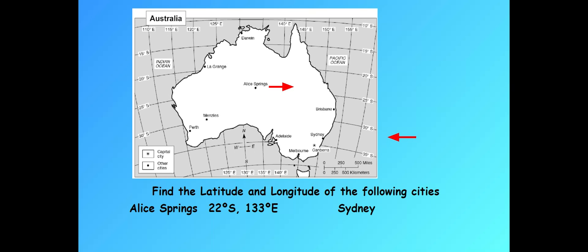You got 20 seconds. All right, and now 10 seconds, start making your final notations. All right, and the correct answer is 34 degrees south, 150 degrees east.